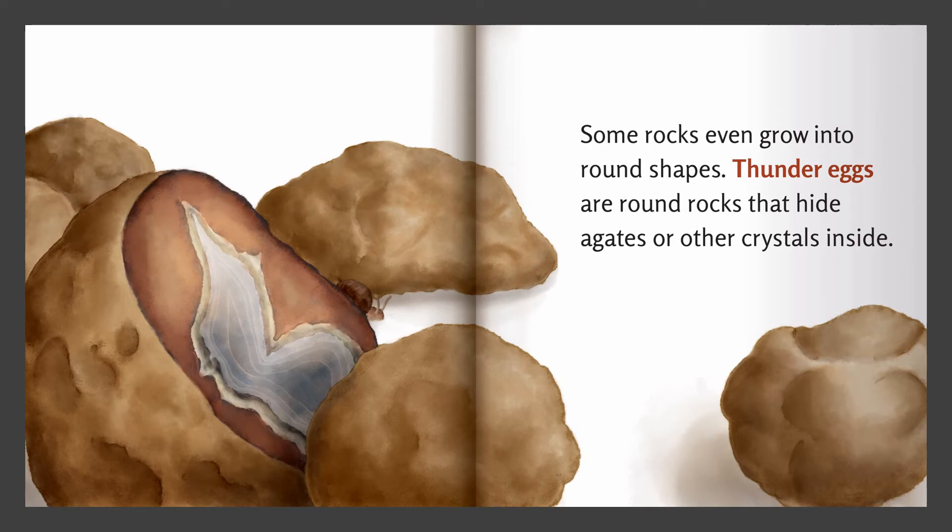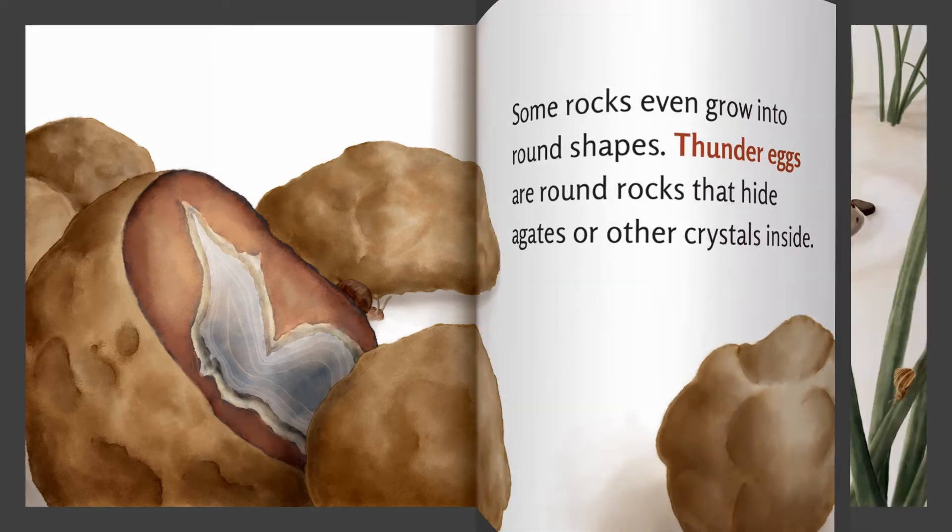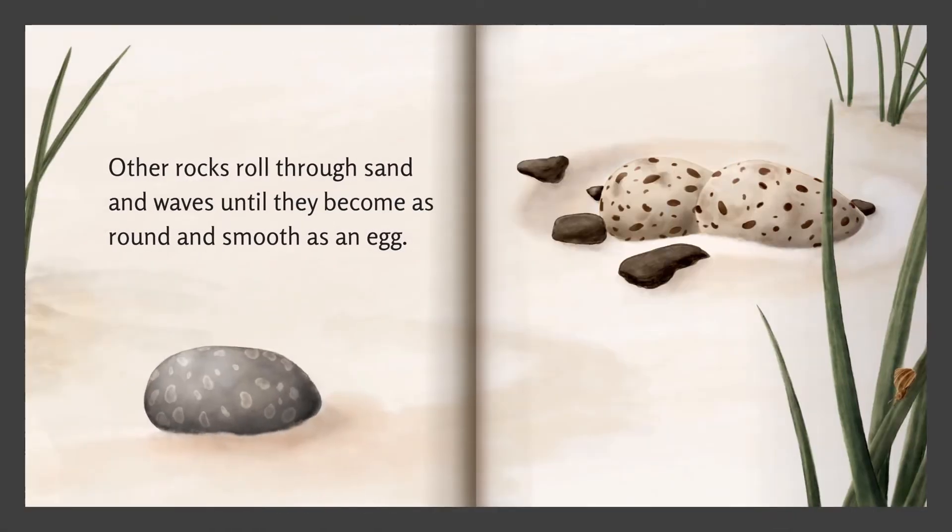Some rocks even grow into round shapes. Thunder eggs are round rocks that hide agates or other crystals inside. Other rocks roll through sand and waves until they become as round and smooth as an egg.